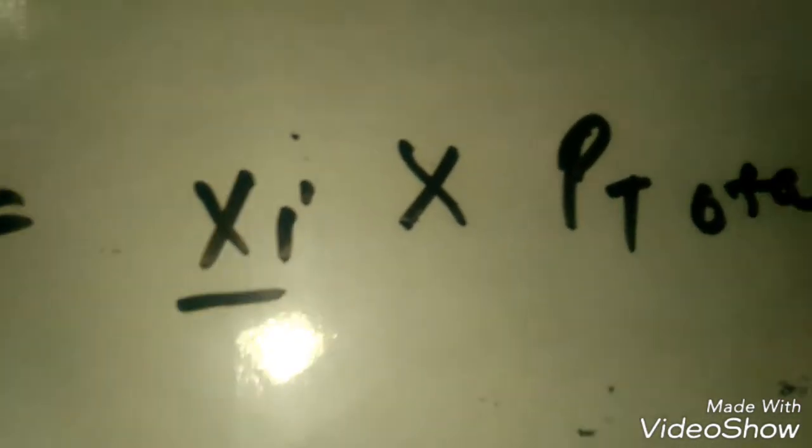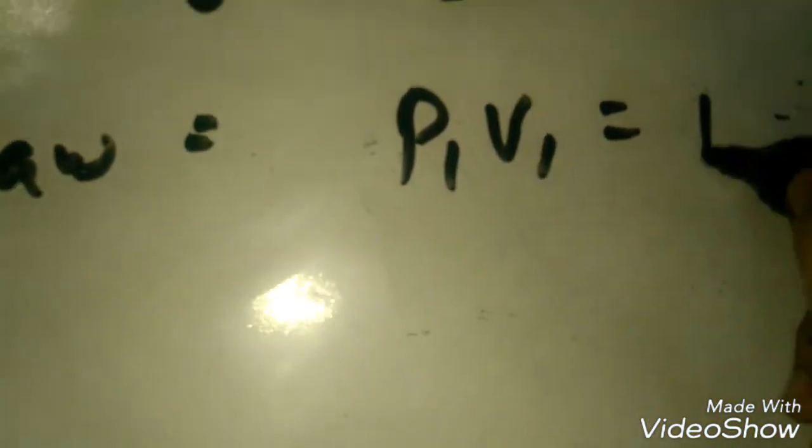So this is all the formulas. In the numericals we have a lot of work. Next is Boyle's law. Boyle's law: P1 V1 is equals to P2 V2.